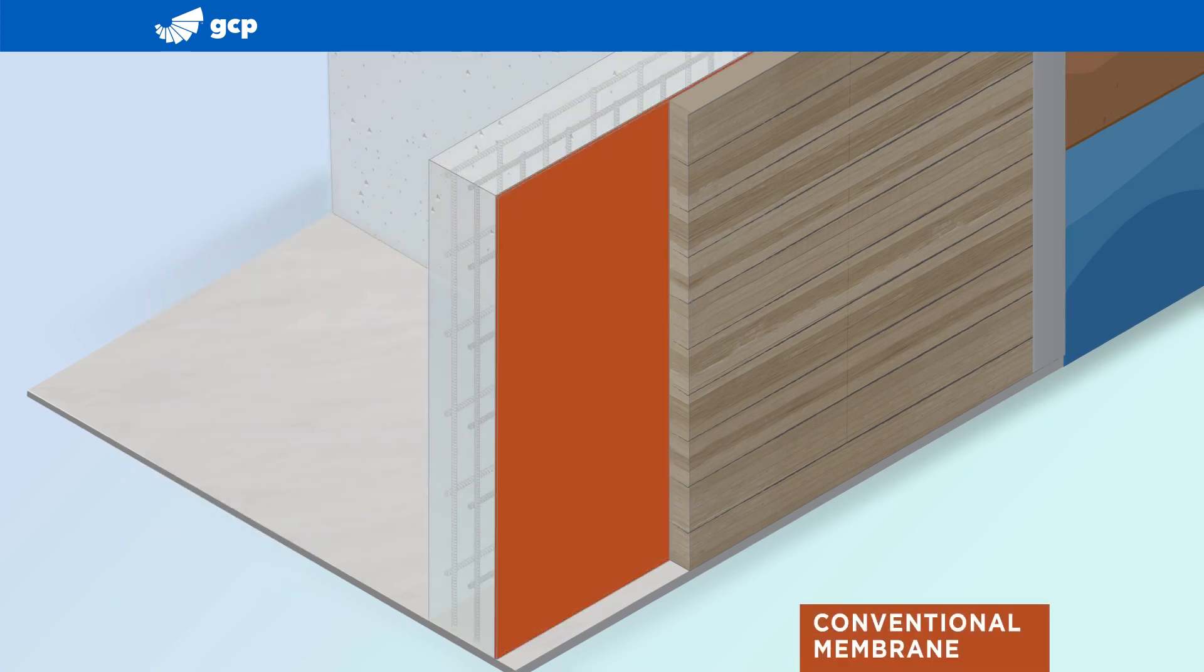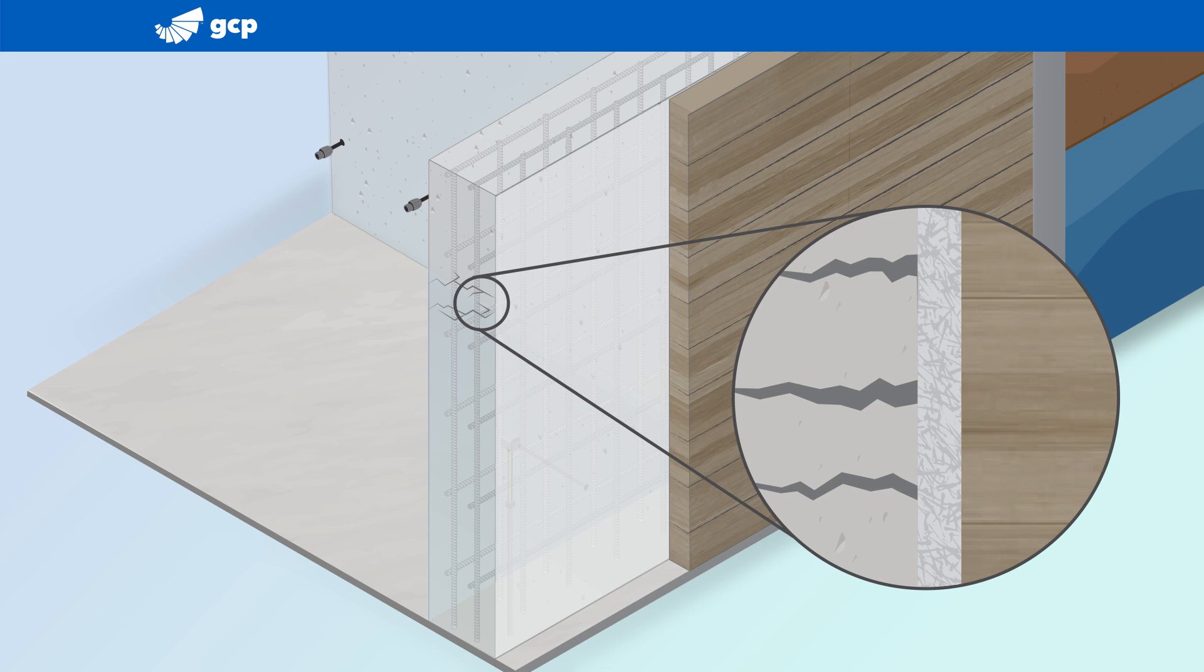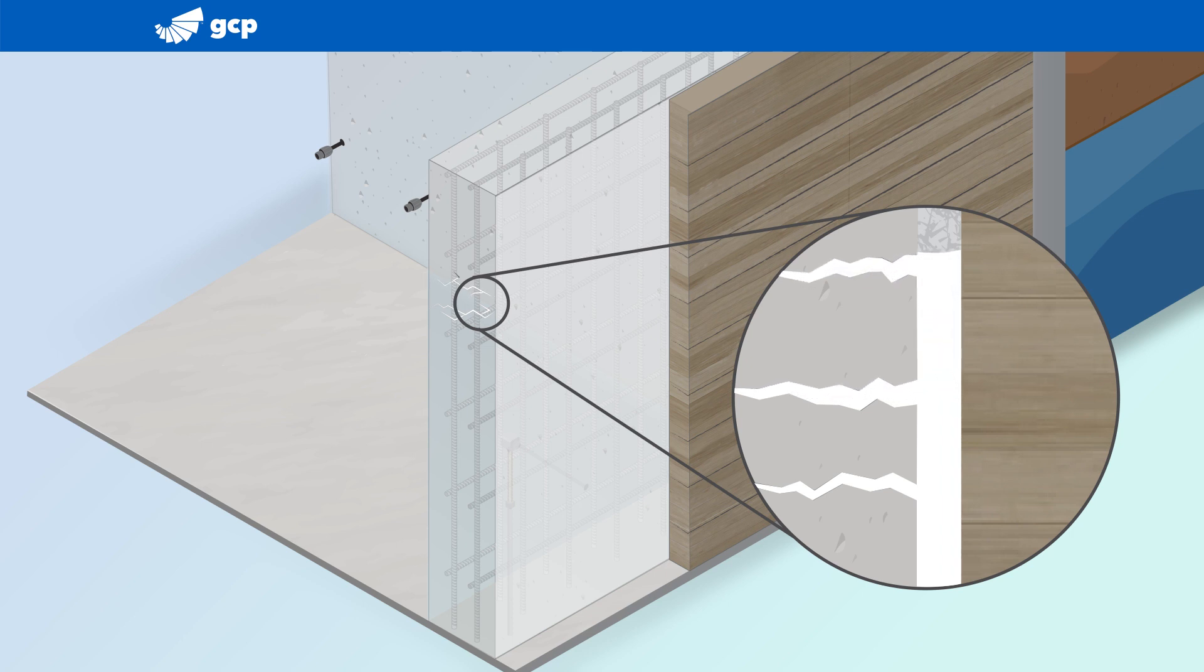Unlike conventional membranes that only waterproof the exterior of the wall and, in case of a breach, can allow lateral water migration, PreProof SCS grout fully adheres to the Shotcrete, filling and sealing cracks, voids, and rebar shadows within the wall to prevent lateral water migration. In the event of water intrusion past the membrane, the grout's gel-like consistency and hydrophilic properties cause it to expand to block water from entering future cracks that form.